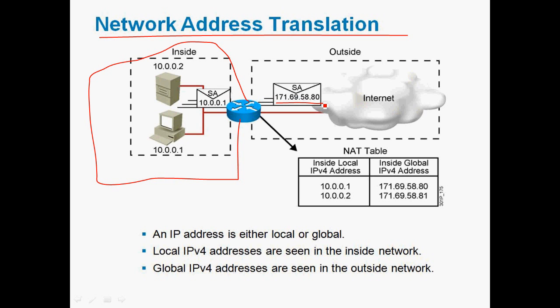For what purpose do we use NAT protocol in this router? We use network address translation for security purposes only. If data is processed through the same IP address in the public network, anyone can access our PC. So we translate the IP address — an IP address is either local or global: local means it is a private address, and global means it is a public IP address.